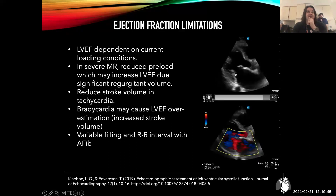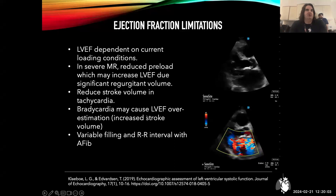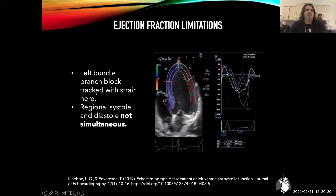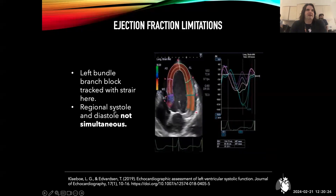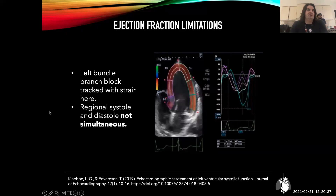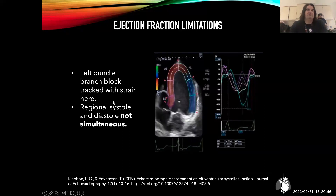Severe mitral regurgitation is another limitation — in patients with severe MR, you do see a reduced stroke volume. Tachycardia is also typically associated with a reduced stroke volume, while bradycardia typically results in increased stroke volume as compensation for the low heart rate. With atrial fibrillation you have variable filling intervals, making it very hard to visually assess a ventricle when filling volumes are irregular. Bundle branch block is another challenging scenario where regional systole and diastole are not simultaneous — if you ask 10 different people to do Simpson's method on the same heart with bundle branch block, you might get 10 different measurements.